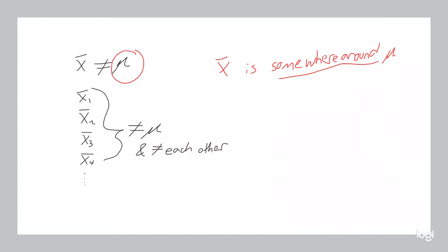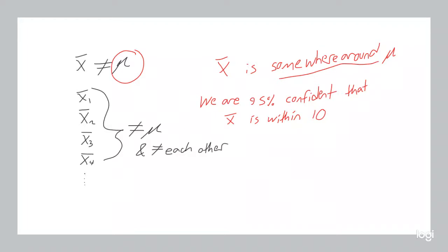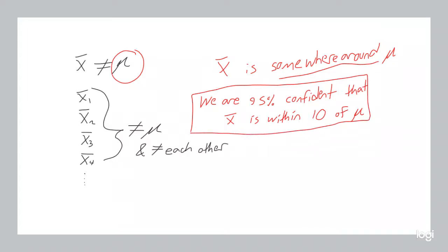We want to be more specific. What do we mean by more specific? Well, if we can say something like: we are 95% confident that the sample mean is within, say, 10 — whatever you're measuring, meters, kilometers, kilograms — of the population mean. Now, that's a quantitative statement. Not 'we think it's somewhere around.' But we are 95% confident that it is within 10 of the population mean. That's where we want to get to, and that's where we'll be using the central limit theorem and confidence intervals.